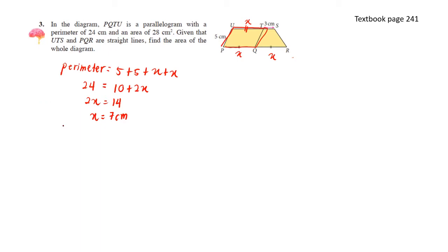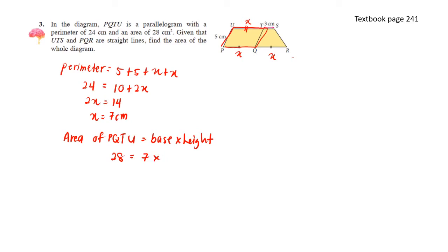Next, we know the area of PQTU. The area of PQTU equals base times height. The area is 28 and the base is 7. We need to find the height, and the height equals 4 cm.